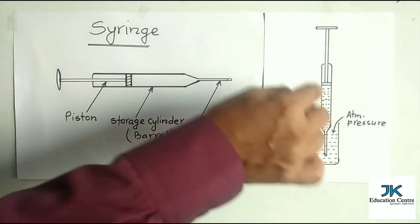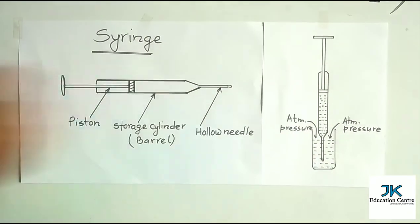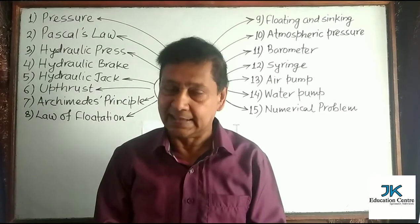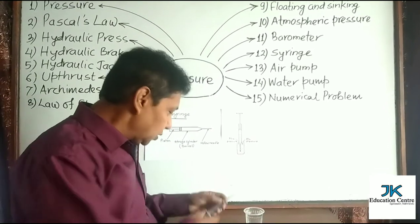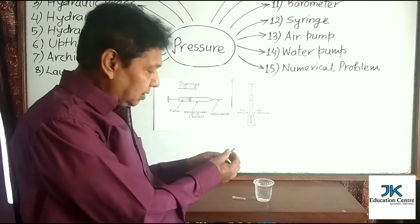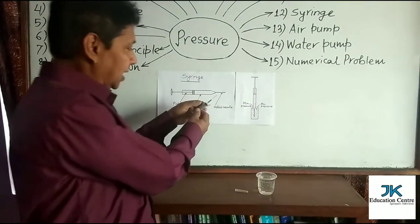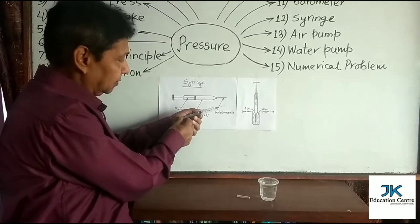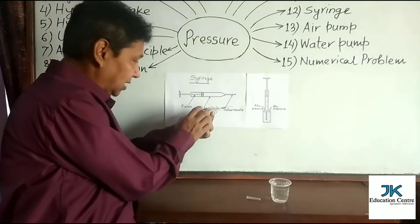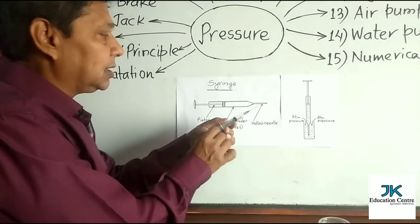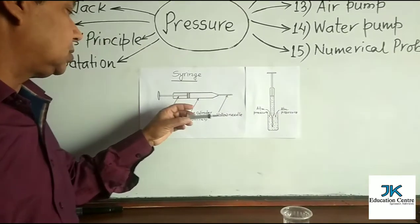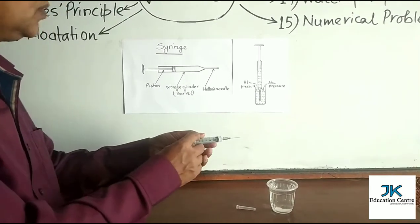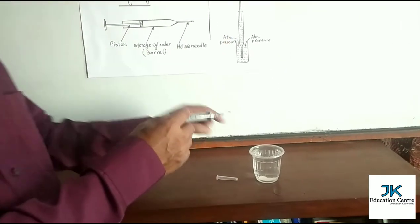This way liquid flows from the high pressure region to the low pressure region, and by this principle liquid medicine is filled into the syringe. Now I want to show you the real syringe which we can get easily in a medical shop. Look at this: this is the hollow needle of the syringe here, and behind this we have the storage cylinder — it is marked to measure the volume of the liquid medicine. Here we have the piston which can be pushed forward and pulled backward. This is the real syringe.